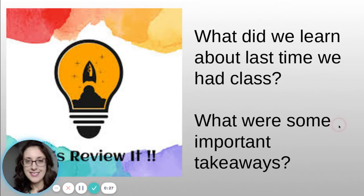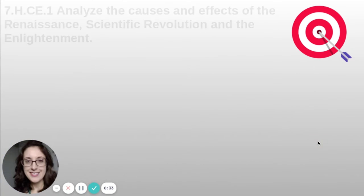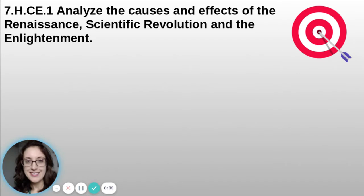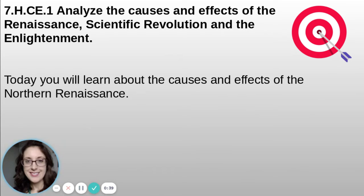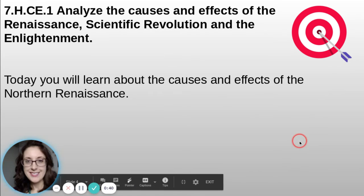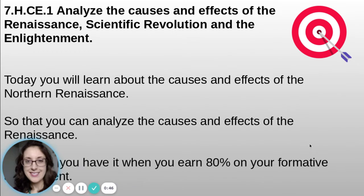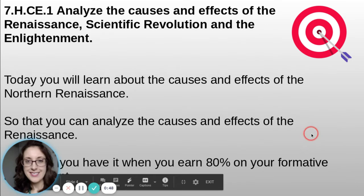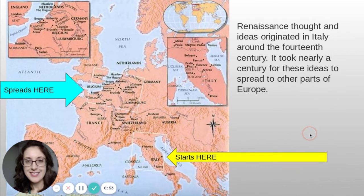What did we learn about last time we had class? What were some important takeaways? The state standard: analyze the cause and effects of the Renaissance, scientific revolution, and the Enlightenment. Today, you'll learn about the causes and effects of the Northern Renaissance so that you can analyze those causes and effects. You'll know you have it when you earn 80% on your formative assessment after today's live lesson.